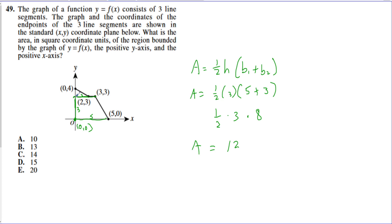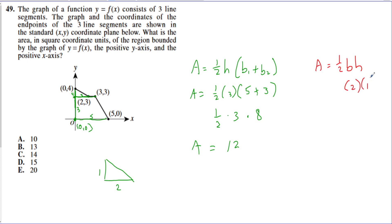For the small triangle on top: it goes from y equals 3 to y equals 4, so height is 1, and from x equals 0 to x equals 2, so base is 2. Area of a triangle is one-half times base times height = one-half times 2 times 1 = 1 square unit. Adding the two non-overlapping areas: 12 plus 1 equals a total of 13 square units.